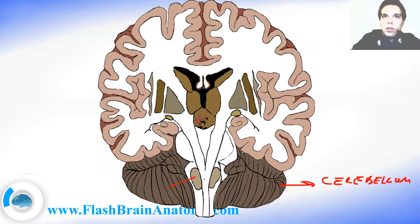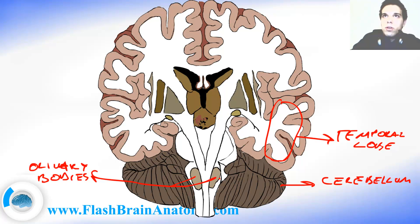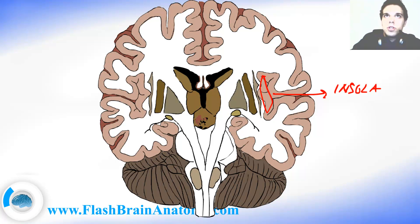These two were the mammillary bodies. Then we had the temporal lobe over here, and over here of course there was the insula, or the so-called insular cortex. Then we had the longitudinal fissure over here.